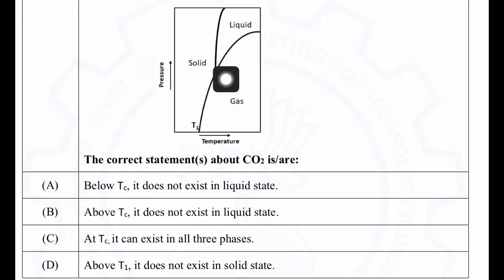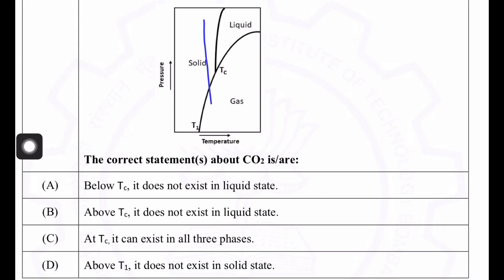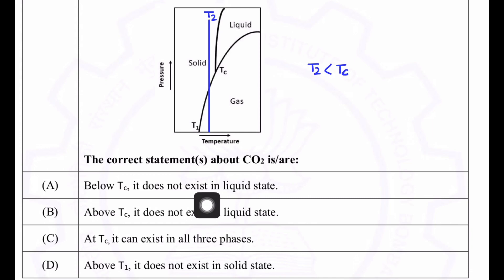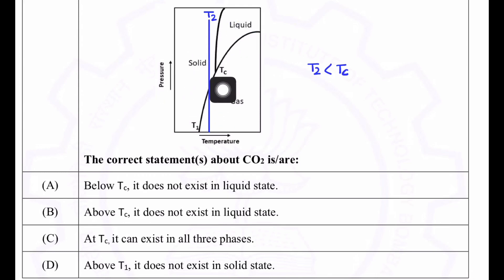Below Tc, CO2 does not exist in liquid state. If I take any temperature below Tc — say t2, where t2 is less than Tc — below Tc we get only solid state and gas state. There is no liquid state below Tc. Liquid state will come at Tc and after that. So the first option is correct.